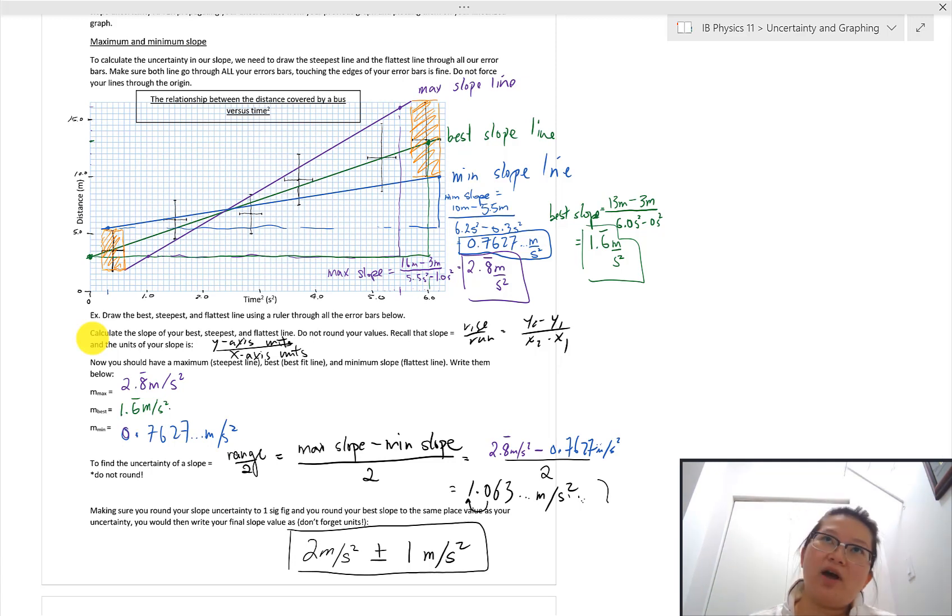So then after you do your slope uncertainty, you do need to have someone write somewhat very clearly your slope and your slope uncertainty rounded correctly with the correct units before you do more work with it.